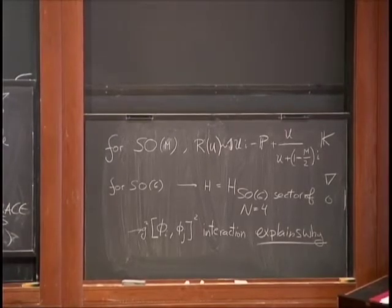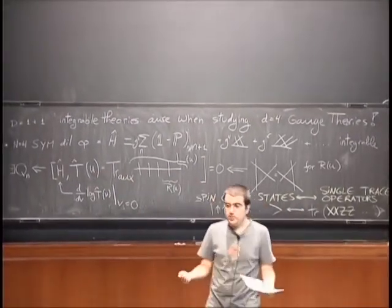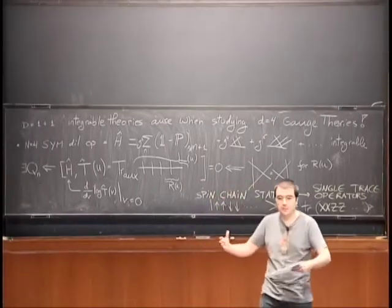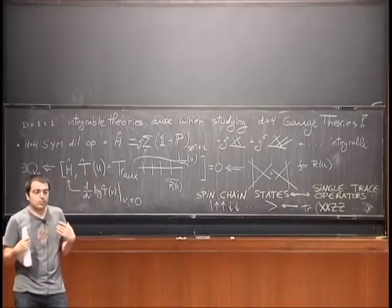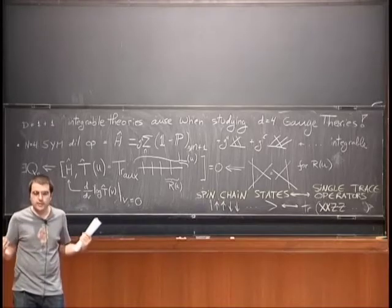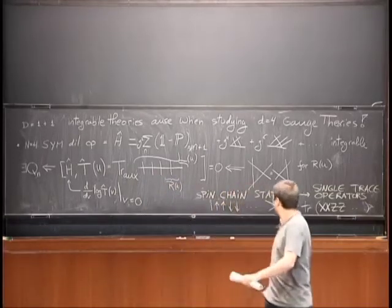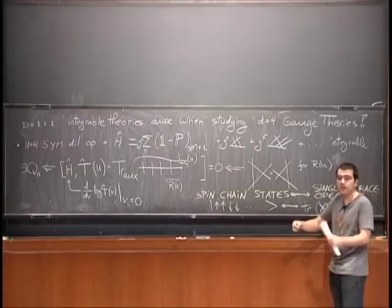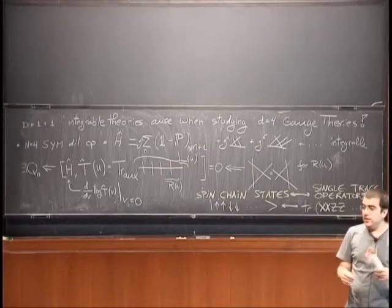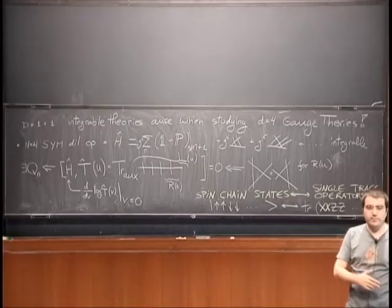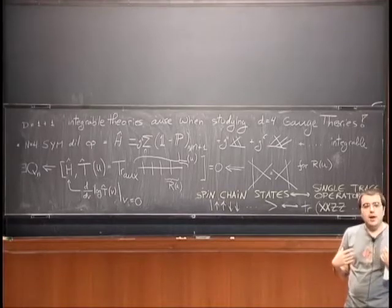What should we take home from this? In four-dimensional gauge theories, if we are smart enough, we can identify 1+1-dimensional structures. That's the usual idea that in the planar limit, gauge theories are somehow string theories. The key step is: if you want to compute some quantity, try to think of it as a 1+1-dimensional quantity. In this case it was particularly simple — we knew that single-trace operators correspond to single strings. But in general, if we want to consider other objects in N=4, like scattering amplitudes, correlation functions, etc., the key idea would be to try to identify a way of thinking about these quantities in the most 1+1-dimensional way possible.